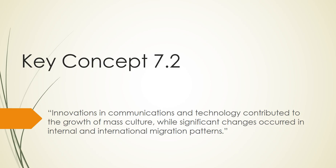Key Concept 7.2 is the second of three in Time Period 7, focusing on innovations in communications and technology and their relation to the growth of mass culture in the United States between 1890 and 1945, as well as significant changes in internal and international migration patterns.